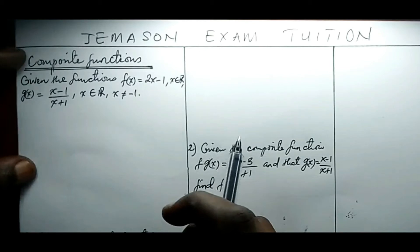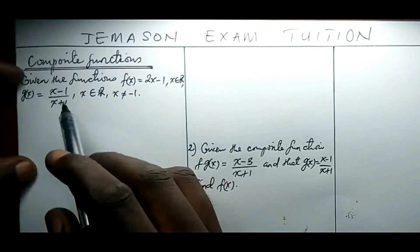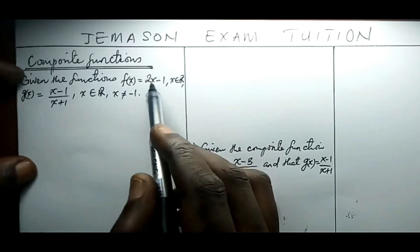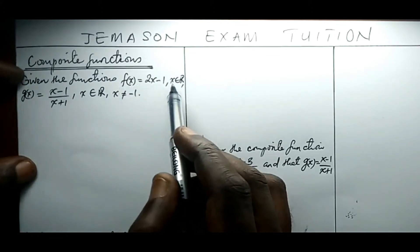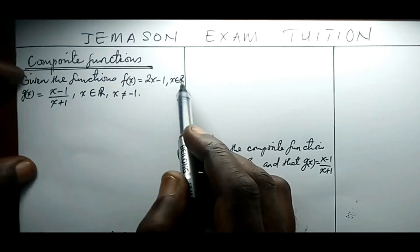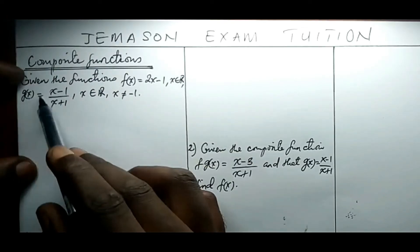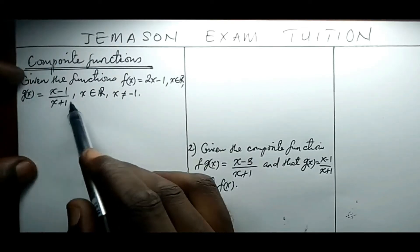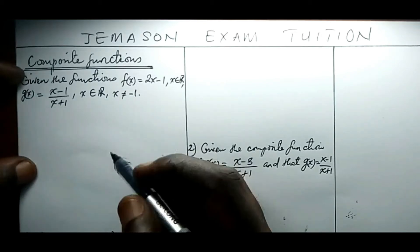Hello. Today we focus on functions. You might be given a situation where f of x equals 2x minus 1 for x values defined on real numbers, and g of x equals x minus 1 all over x plus 1 for real numbers except negative 1.